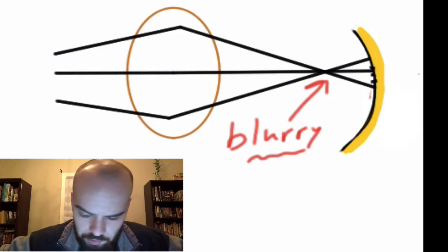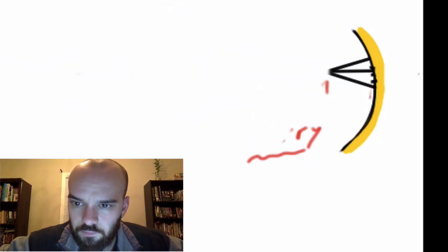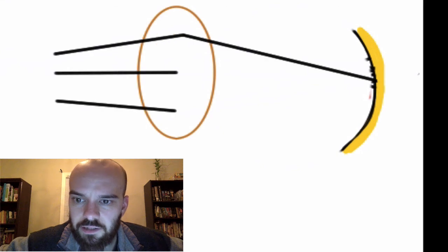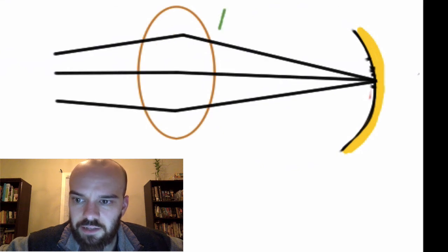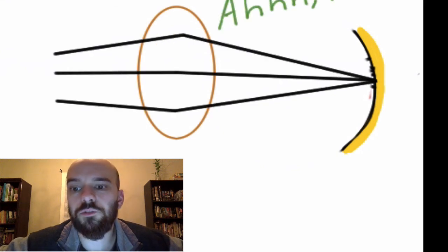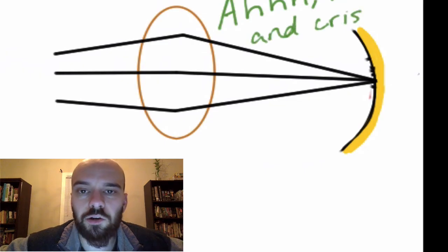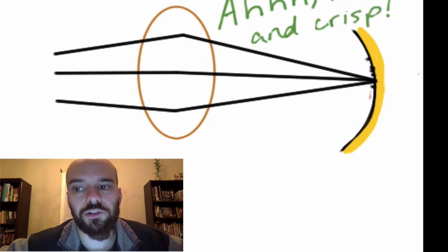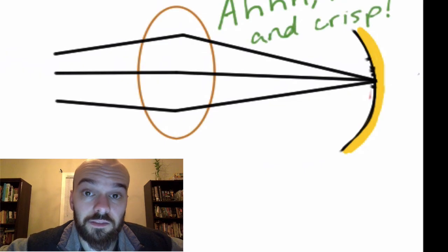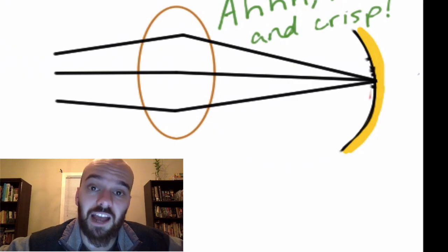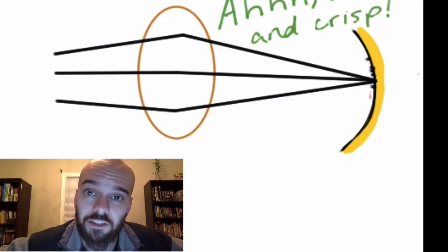Finally, let's look at somebody with normal vision. We've got a lens here, light's going to enter in, and it's going to converge directly onto the retina. That's going to give a nice, clear, crisp image. That's the parts of the eye and how the eye works. Thanks for watching, and I'll see you next time.